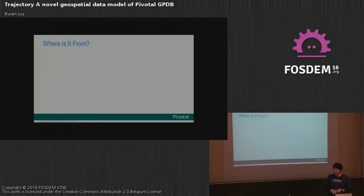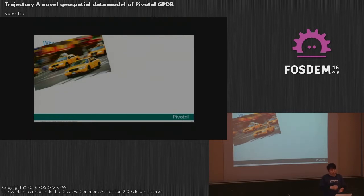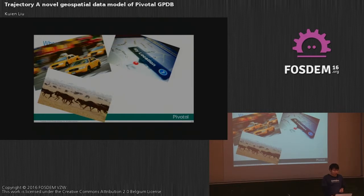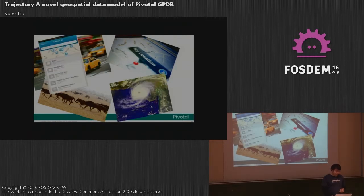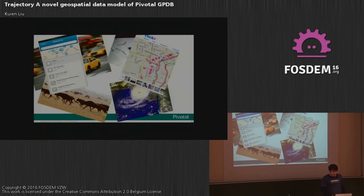Where can we get trajectory data? The first source is taxis. In China, most traffic information is generated from taxis — companies collect GPS data from taxis to generate traffic information. We can also use navigation systems, GPS attached to animals (as done in Australia), satellite data, and check-in data from apps like Flickr. Multimedia data with geo-tags is another source — for example, if you record a video with a Sony camera or take a photo with GPS enabled and upload it to a website, you can find the location.